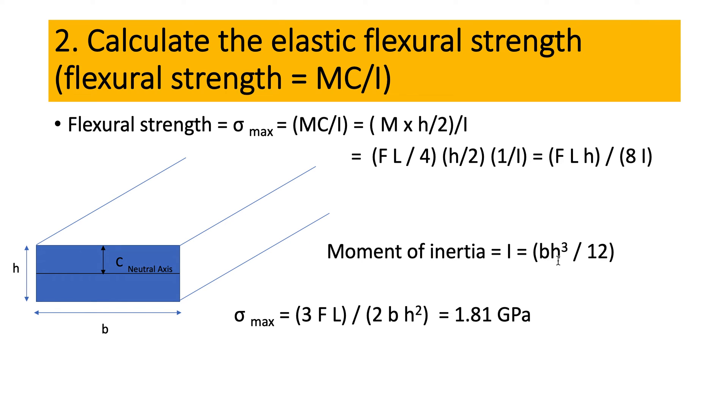And then we have the moment of inertia. You remember we calculated the moment of inertia previously using the formula that I equals B times H cubed divided by 12. B is the width, H is the thickness, and that's a constant.